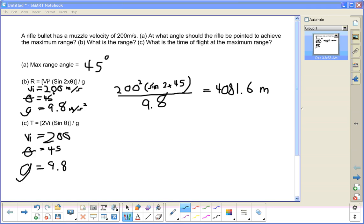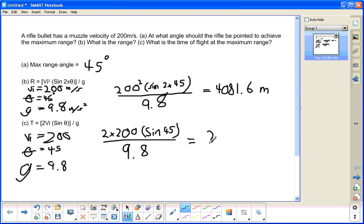For the next one, you're trying to figure out the time of flight. Then you list your givens, which is initial velocity, again 200, theta, which is 45 degrees, and gravity, which is 9.8. So the equation for time is 2 initial velocity times sine theta over gravity. Then you just plug in the values, and you should get 28.9 seconds.